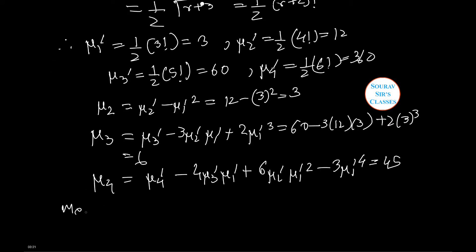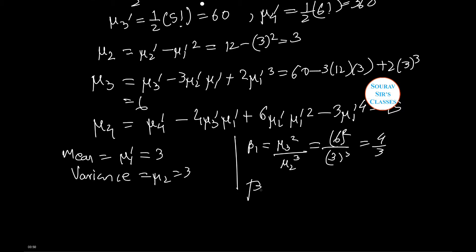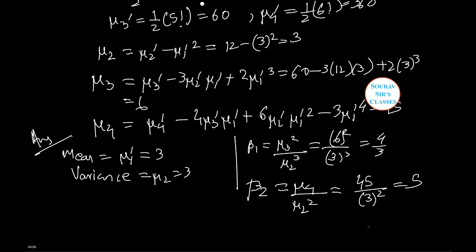Now finding all the quantities asked in the question: mean equals mu 1 dash equals 3, variance equals mu 2 equals 3, beta 1 equals mu 3 squared divided by mu 2 cubed equals 36 divided by 27 equals 4/3, and beta 2 equals mu 4 divided by mu 2 squared, which is 45 divided by 9, equal to 5. Thus these are the answers to this question.